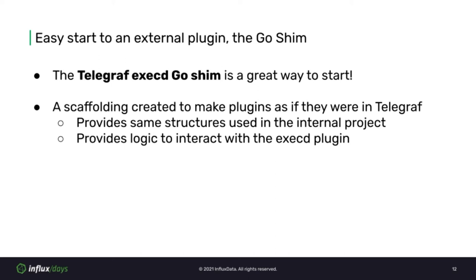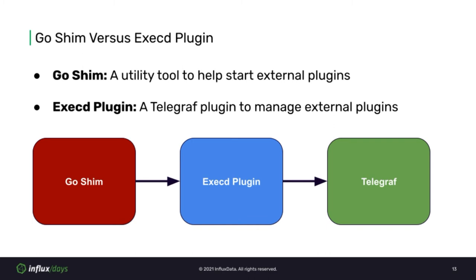Let's recap the terminology. When I talk about the Go Shim, this is a very isolated utility tool used to create external plugins written in Go, and it can also help you migrate currently internal plugins to become external plugins with very little effort. The ExecD plugin, on the other hand, is an actual internal plugin living within the Telegraph project that exists to manage external plugins configured to run with Telegraph. They have completely separate jobs in this process.